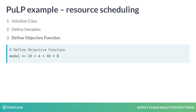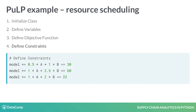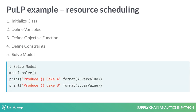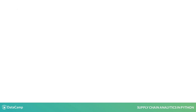Next, we define the objective function using our variables. Then, we define the constraints. PULP is able to identify which equations are constraints because of the inequalities. Finally, solve them all. The optimized values are stored in var value.